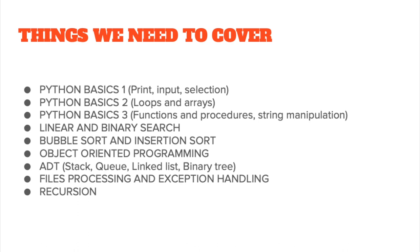From lesson six onwards, we're going to start looking at the serious stuff: object-oriented programming, classes, things like that. We're going to look at abstract data types — stack, queue, linked list, binary tree. And then we're going to move on to file processing and exception handling before we round everything up with recursion.